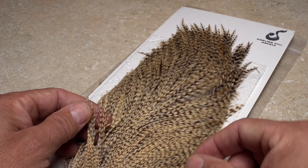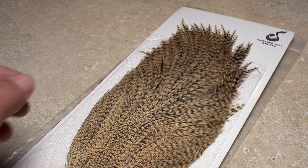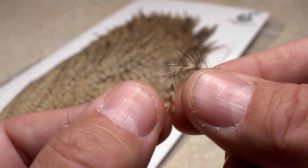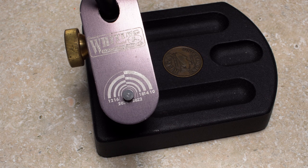Modern hackle capes and saddles are marvels of genetic engineering, but if not correctly sized prior to tie-in, they simply won't do what they're supposed to do. The easiest way to size a hackle is with a quality hackle gauge that's usually attached to the stem of your tying vise.